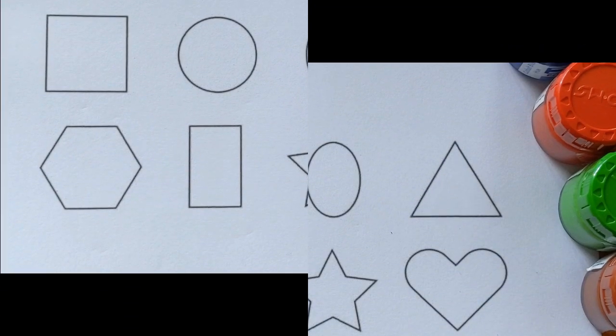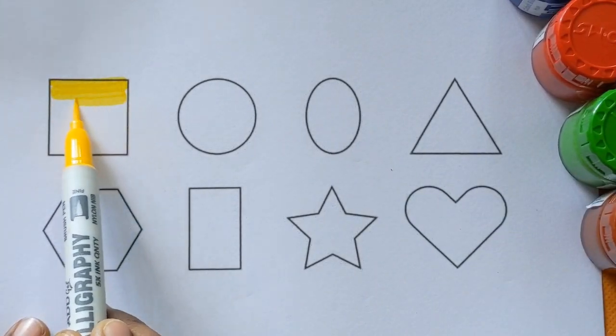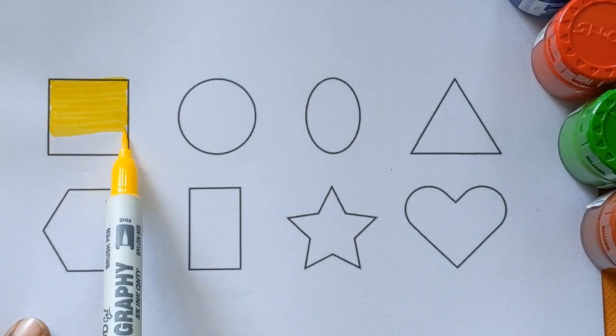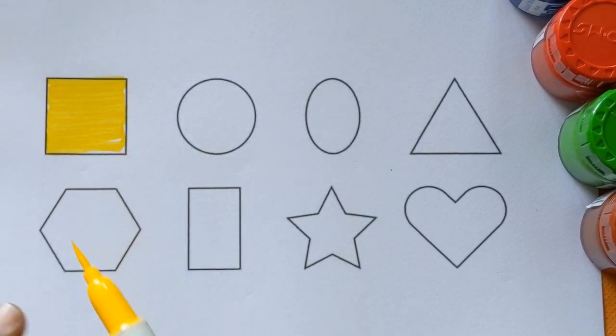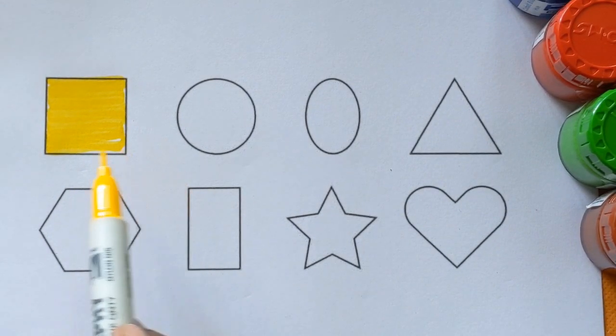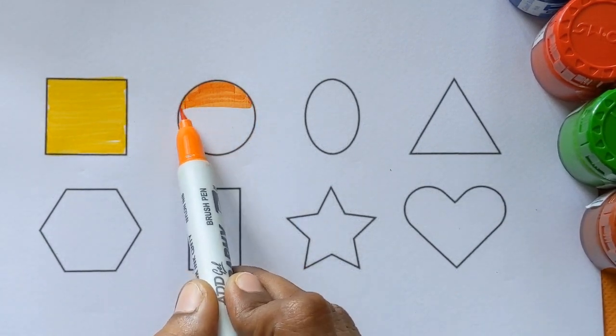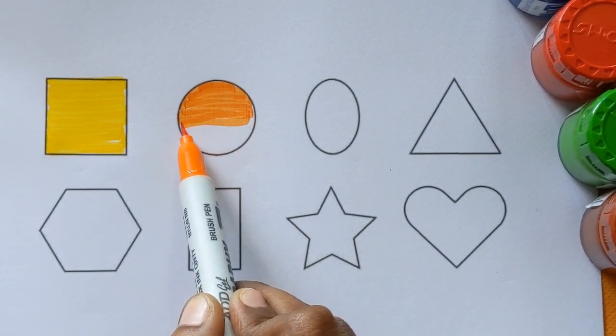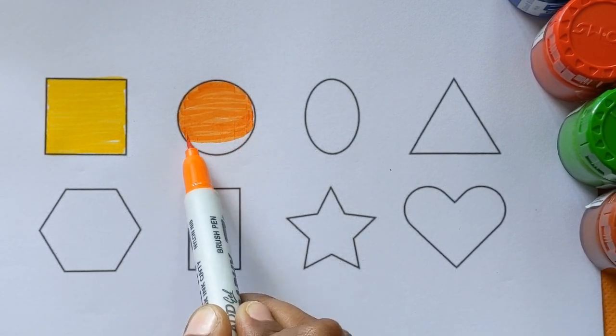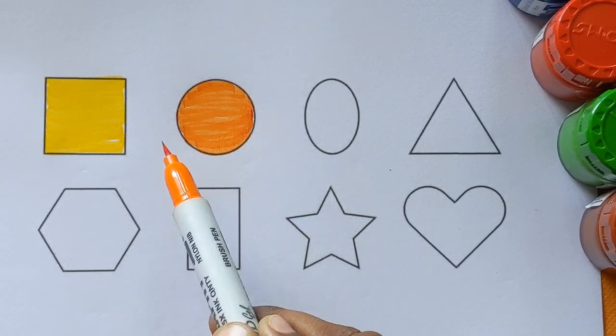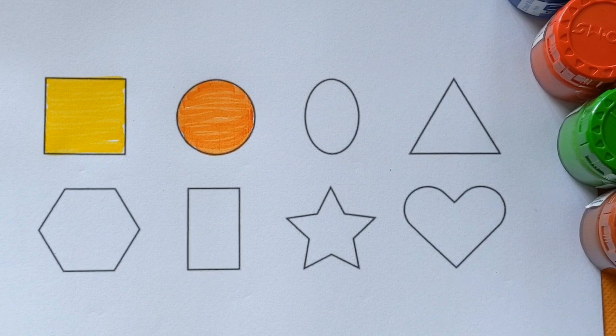Now let's color the shapes. Square, yellow color. This is circle with orange color.